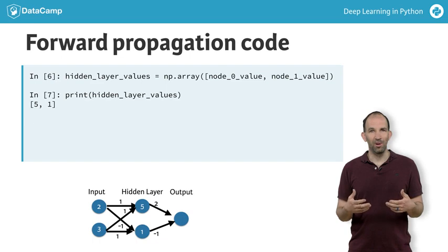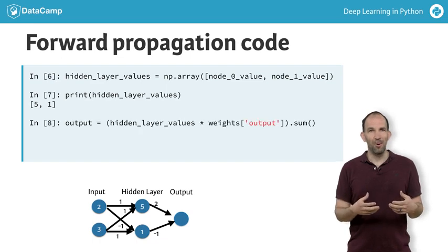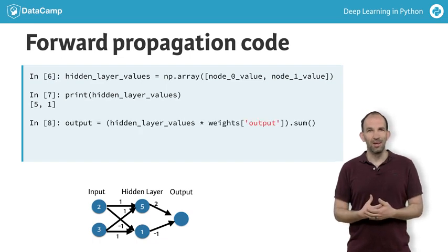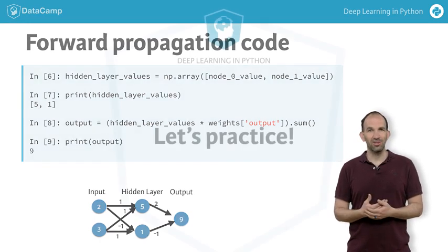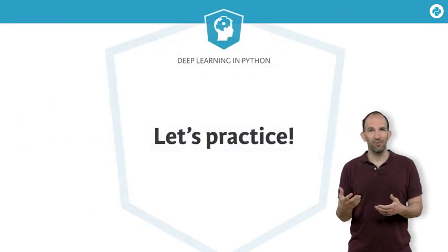To get the output, we multiply the values in the hidden layer by the weights for the output. Summing those together gives us 10 minus 1, which is 9. In the exercises, you'll practice performing forward propagation in small neural networks.